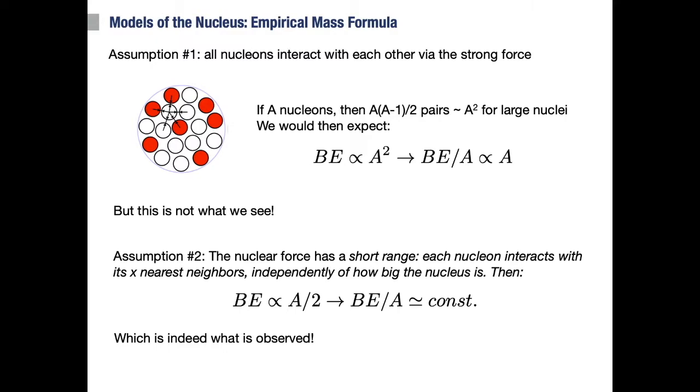To start, let us first consider the nuclear force between nucleons. Let's assume that this force does not care about the type of nucleon, so it's the same between protons and protons, protons and neutrons, and neutrons and neutrons. Now, if we assume that all nucleons interact with each other via this force, then we would expect the binding energy to be something like the sum of the binding energies between each possible interacting pair.